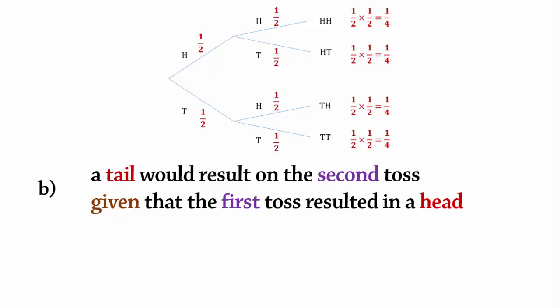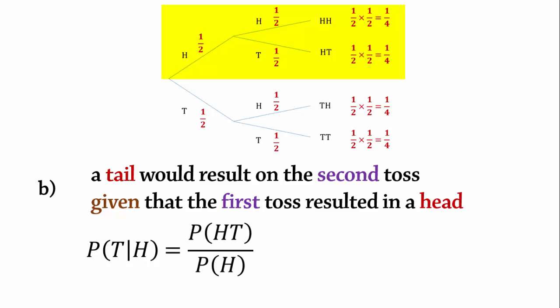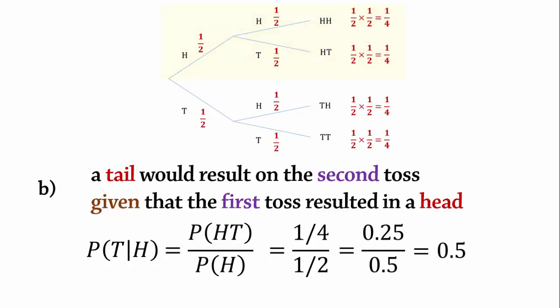Part B. What is the probability that a tail would result on the second toss given that the first toss resulted in a head? That is, we need to find P(tail on second | head on first). By formula, this is the probability of H and T divided by the probability of H — that is, (1/4) divided by (1/2) — and that gives 0.5.